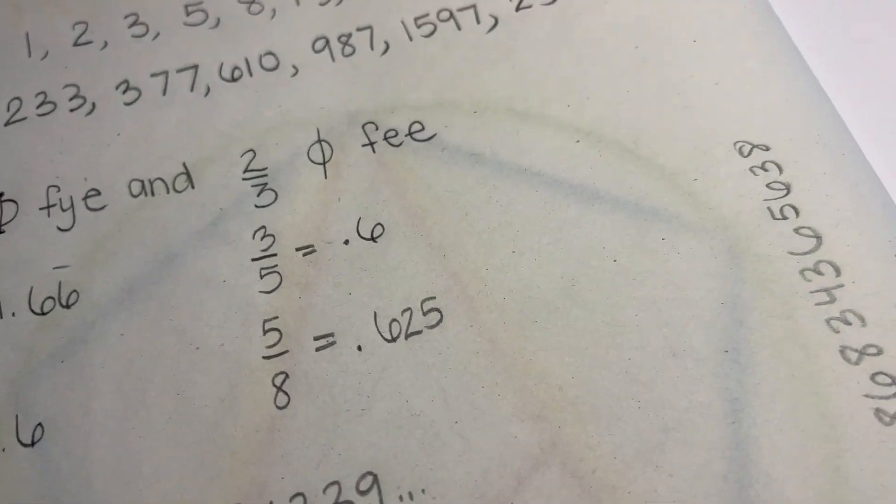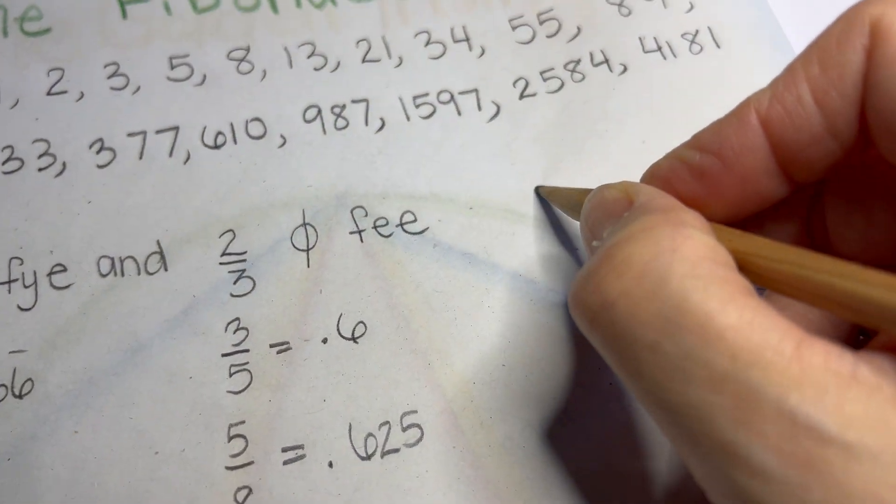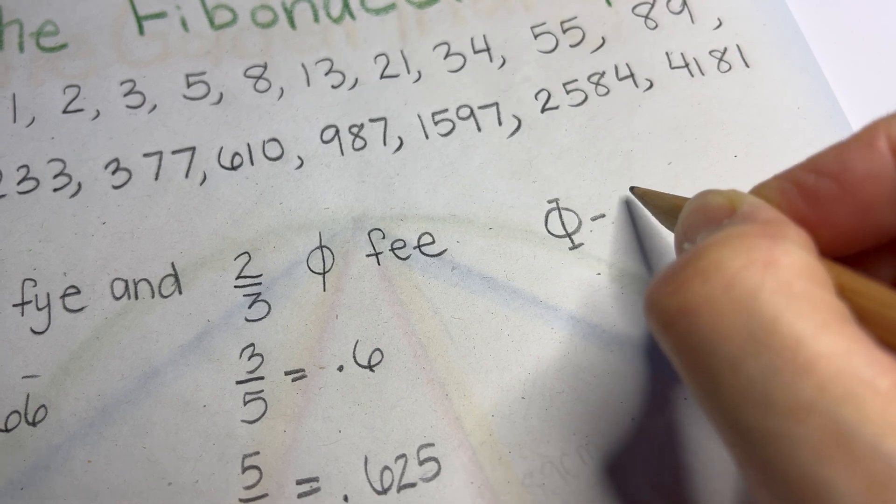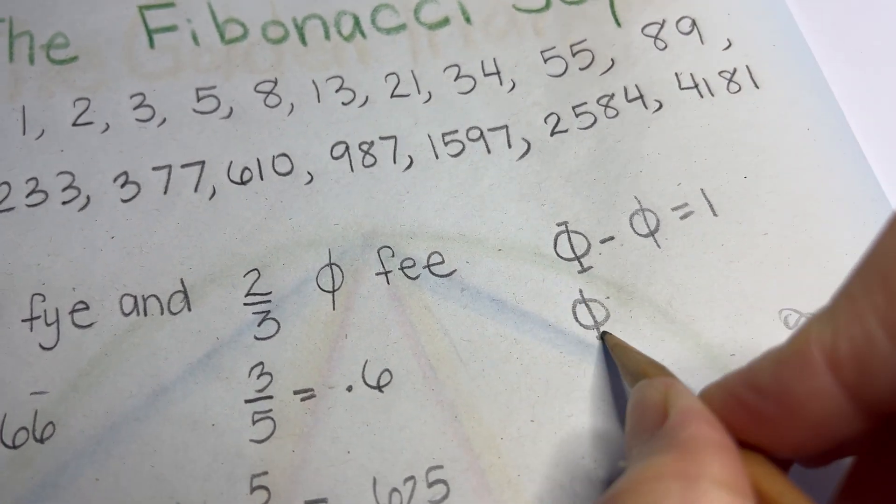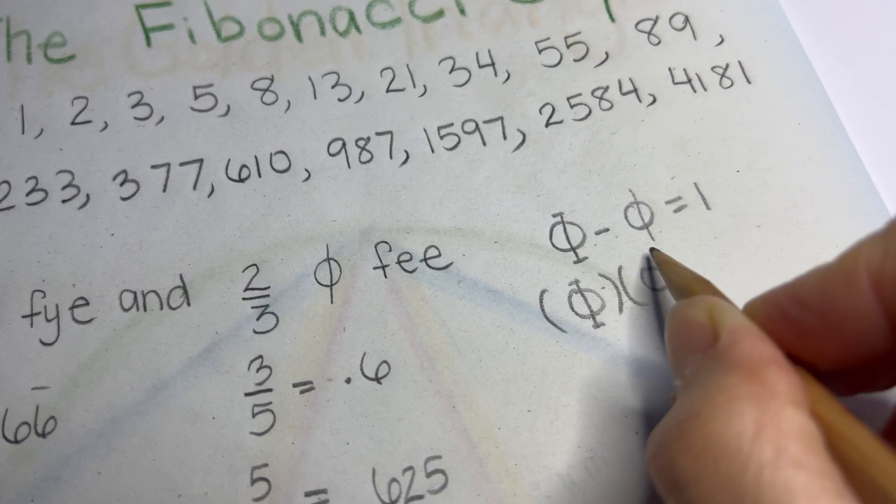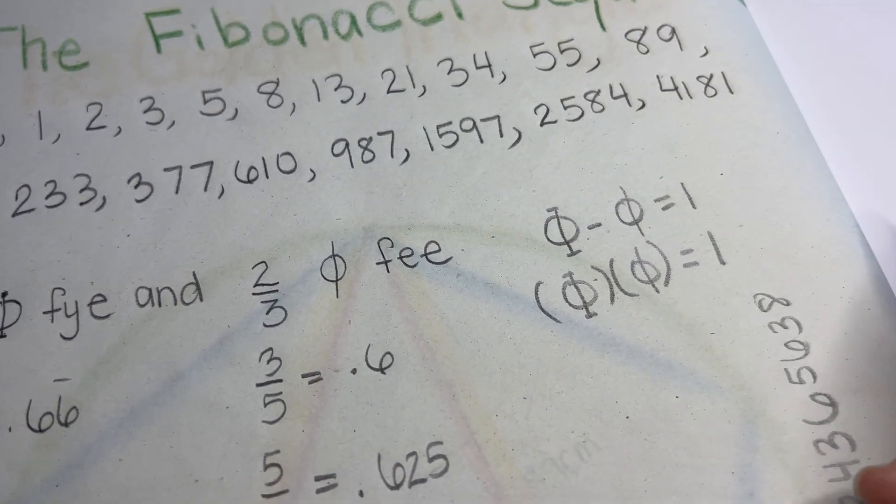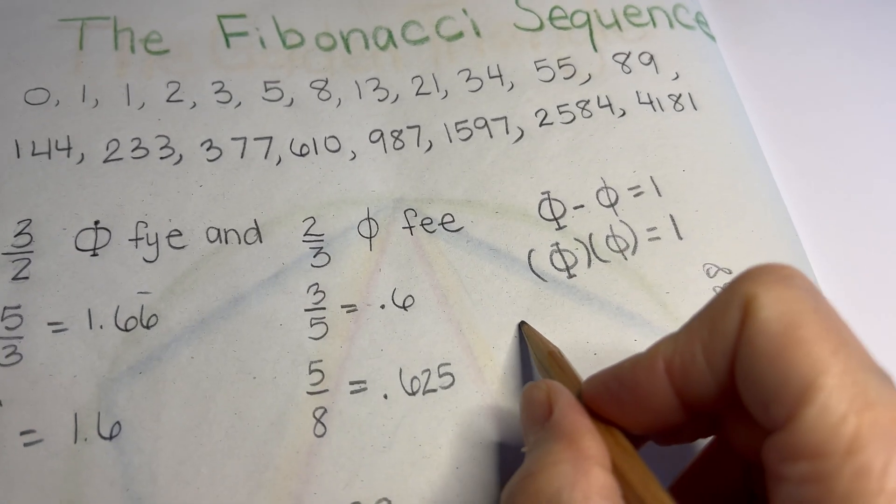And then we wrote out the Fibonacci sequence for many, many digits. There are people who do memorize pi and phi to many digits, which is really amazing. Then we went ahead and wrote down some very interesting things about phi and phi.